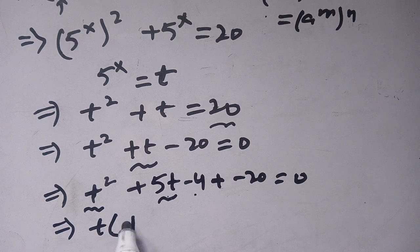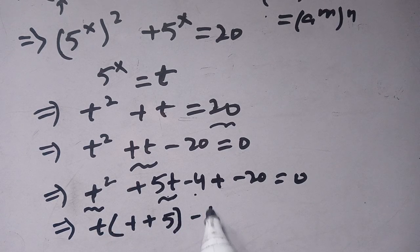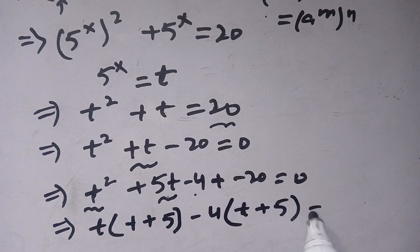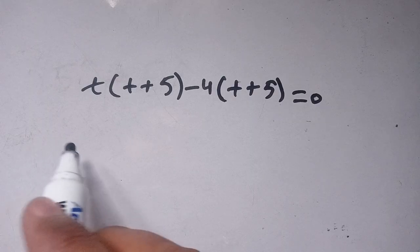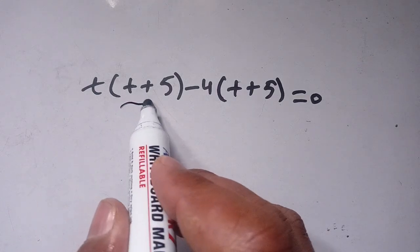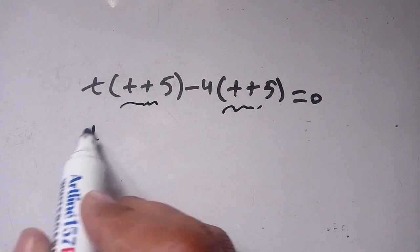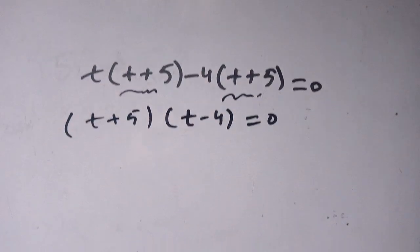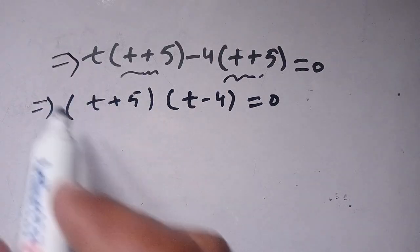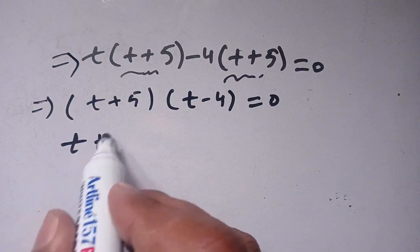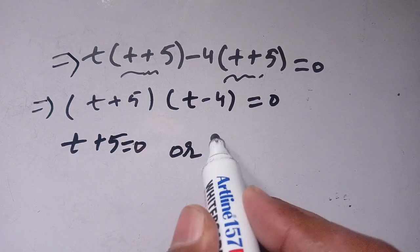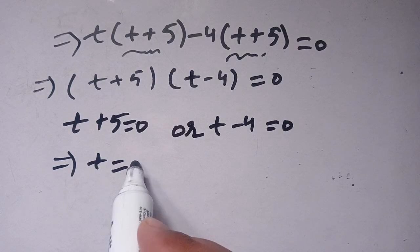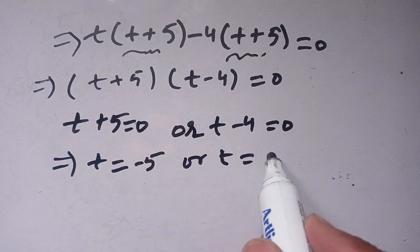We get t times (t minus 4) equal to 0. In the next step we take out (t plus 5) common, and we get (t plus 5) times (t minus 4) is equal to 0. Now comparing both factors to 0, we get t plus 5 is equal to 0, and t minus 4 is equal to 0, giving t is equal to minus 5 or t is equal to 4.